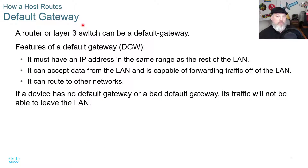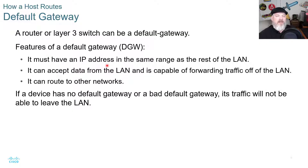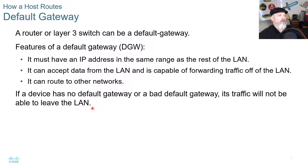The default gateway is a term you need to be familiar with. A router or Layer 3 switch can be a default gateway. A default gateway must have an IP address in the same range as the rest of the local area network, it can accept data from the LAN and is capable of forwarding traffic off the LAN, and it can route to other networks. If a device has no default gateway or a bad default gateway, its traffic will not be able to leave the local area network.